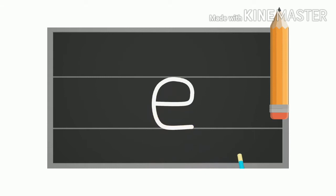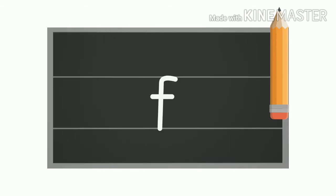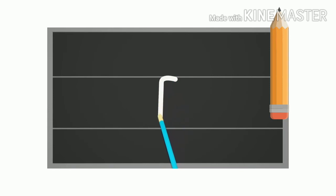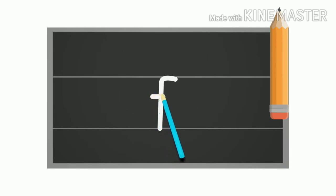Small f: start from the top making a curl, then continue to make a straight line down. Next, go to just below the top and draw a sleeping line across. This is your small f.